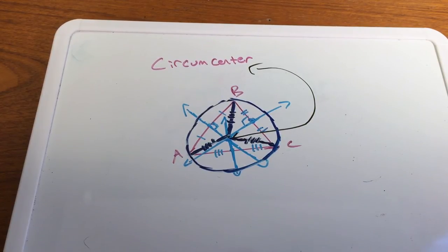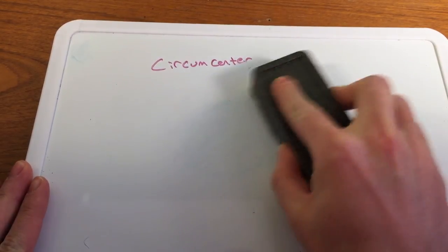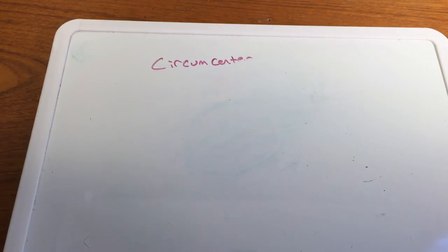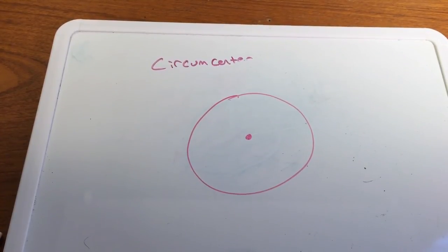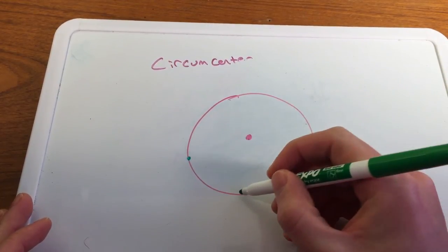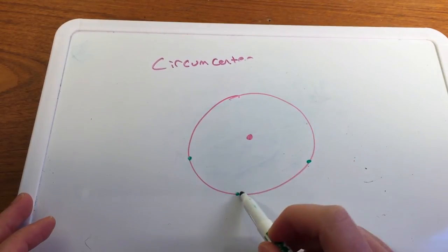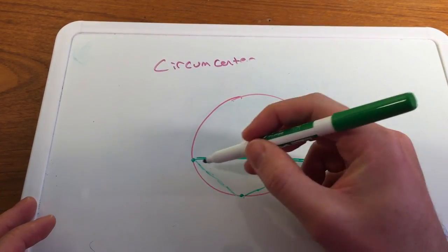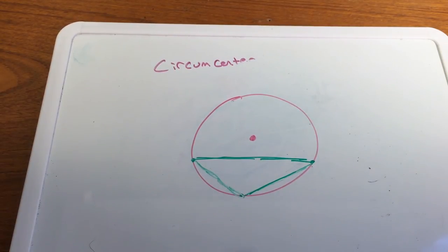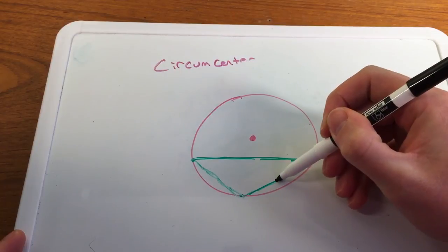Sometimes it's easier to construct the circumcenter of a triangle by drawing the circle first. If I draw a circle and pick any three points along it to form a triangle, that circle's center will be the circumcenter of that triangle. Let's make an obtuse triangle — picking a point here, here, and here. For an obtuse triangle, the circumcenter will be outside the triangle. Let's find the midpoints and draw perpendicular bisectors.